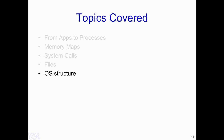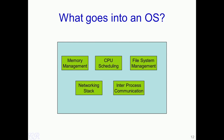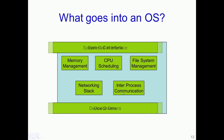We will now look at how a typical operating system structure looks like. The operating system has several modules built internally. For example, it would have a memory management module which manages all the memory in the system, a CPU scheduling block, a file system management module which controls how file systems such as those present in hard disks or CD-ROMs are managed, a networking stack which manages the TCP/IP network, and an inter-process communication module which takes care of processes communicating with each other. Two important things are the system call interface, which allows user processes to access features or functionalities within each of these modules, and device drivers which communicate with the hardware devices.